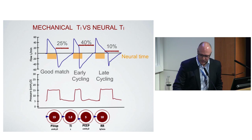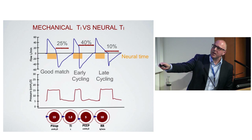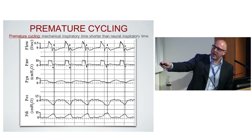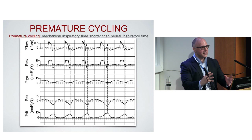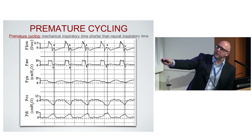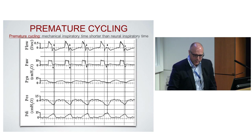With three pressure support breaths and a fixed neural time: breath one is a perfect match where breath and neural time are exactly the same. Early cycling is when the ventilator stops before neural time. Late cycling is when the neural time ends before the ventilator, so the patient wants to breathe out but we are still insufflating. A 25% criterion gives good match, 40% gives early cycling, and 10% gives late cycling.